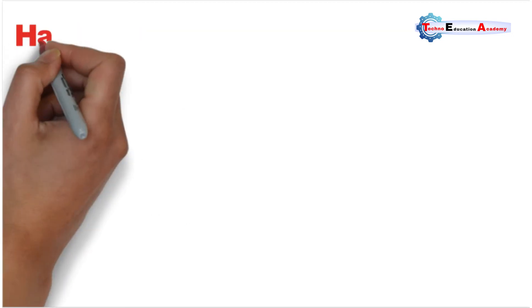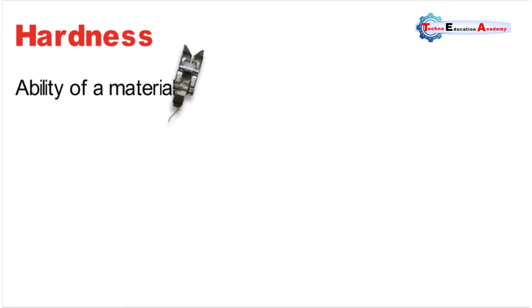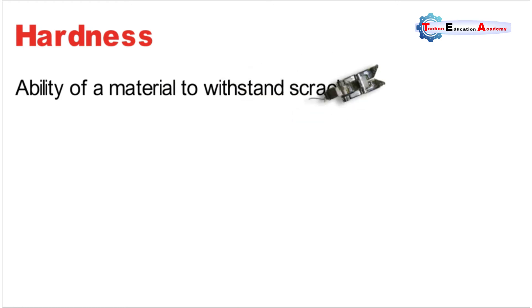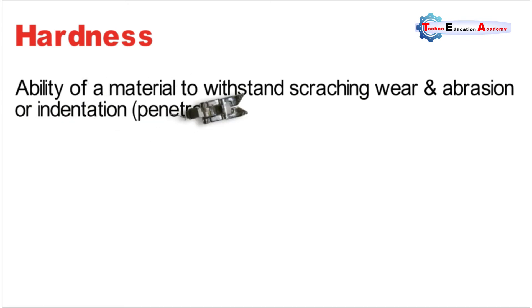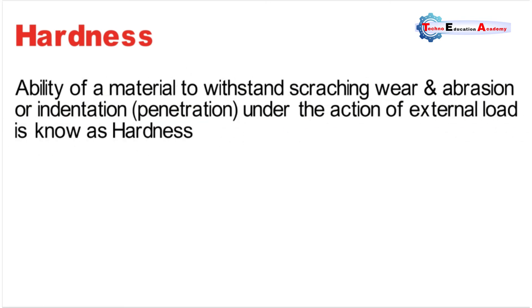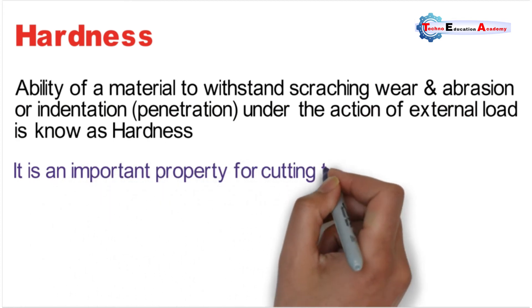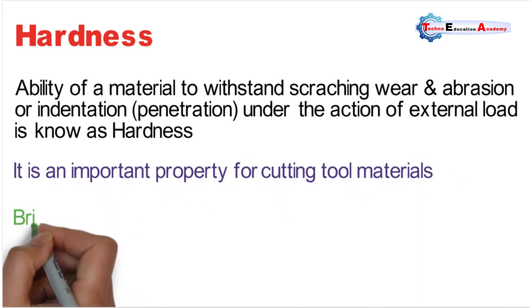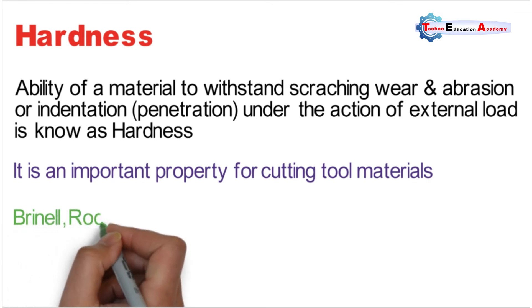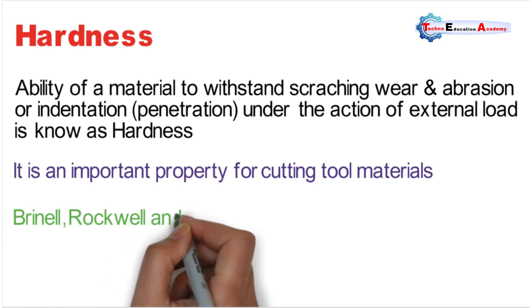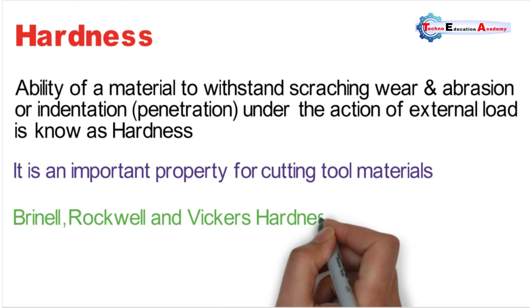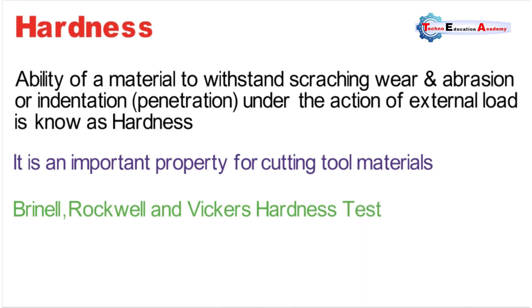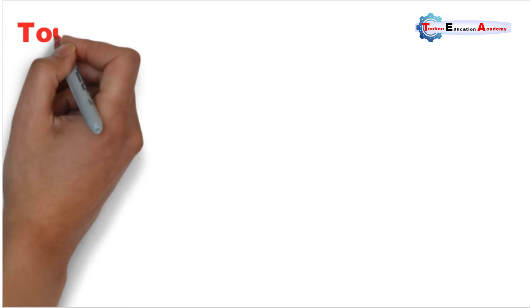The next property is hardness. Hardness is the ability of a material to withstand scratching, wear, abrasion, or penetration under the action of external load. Hardness is an important property for cutting tool materials and for components which must resist wear. Hardness is mostly measured by determining the resistance to penetration by different methods such as the Brinell hardness test, Rockwell hardness test, and Vickers hardness test.